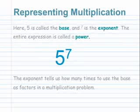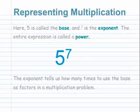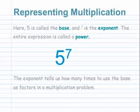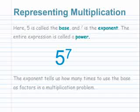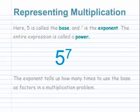Here, 5 is called the base and 7 is the exponent. The entire expression is called a power. The exponent tells us how many times to use the base as factors in a multiplication problem.